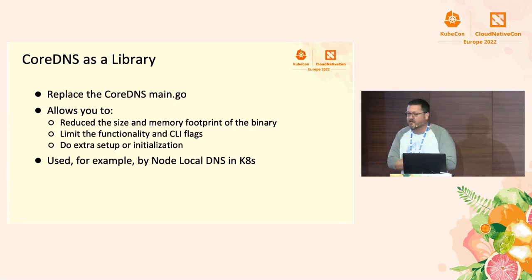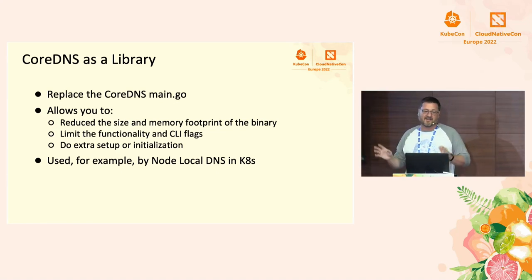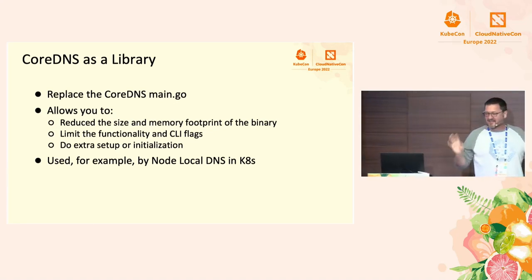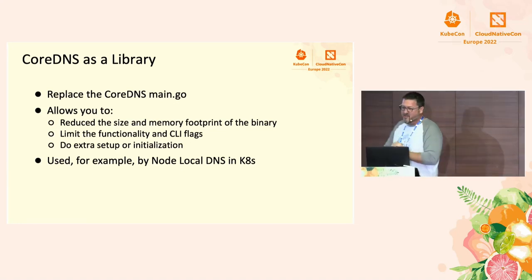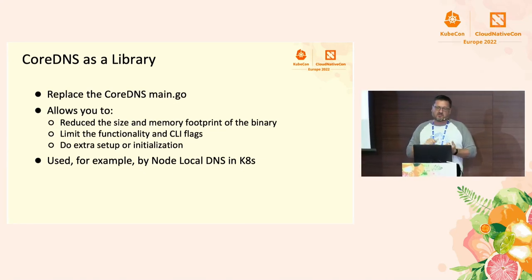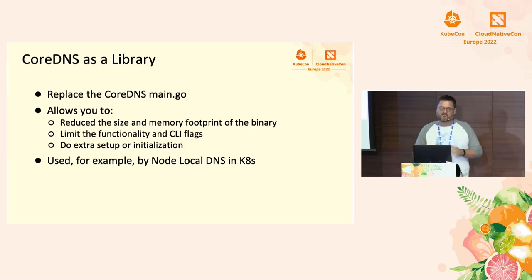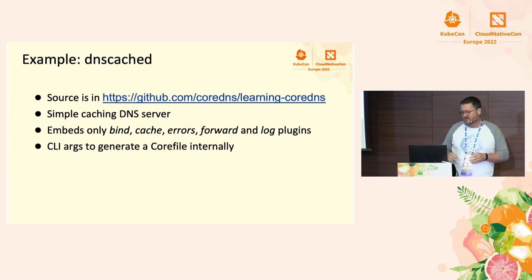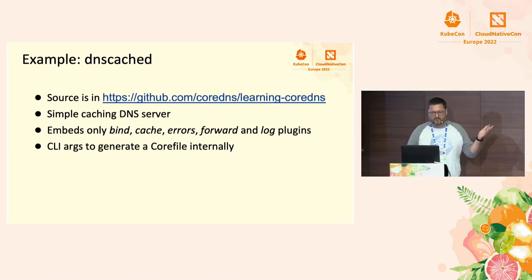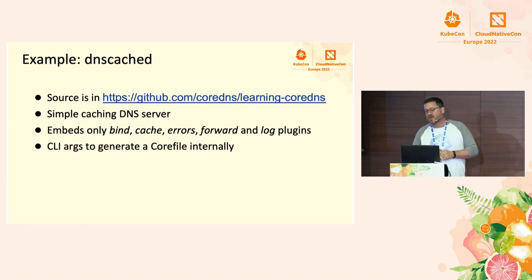If you have weird DNS issues in Kubernetes, try node local DNS, because there are kernel issues, race conditions, conntrack filling up with UDP, and all sorts of subtle things that can happen under load that node local DNS fixes. I, along with Cricket Liu — who wrote DNS and BIND and related books — wrote a Core DNS book and we go through this example there.